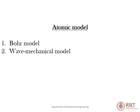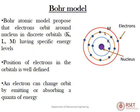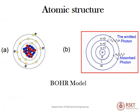Considering two types of atomic models — the Bohr model and the wave mechanical model — the Bohr model shows discrete orbits. The Bohr atomic model proposed that electrons orbit around the nucleus in discrete orbitals labeled K, L, M, N, which have specific energy levels. The positions of electrons in the orbits are well-defined, and an electron can change orbit by emitting or absorbing a quantum of energy.